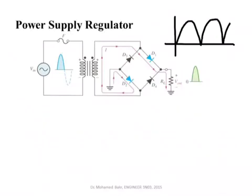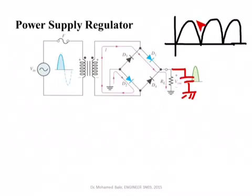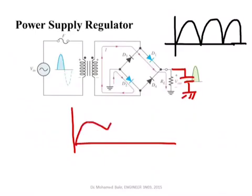If I want to supply this rectified voltage to a machine or tablet, I need a DC voltage. The solution is to add a large capacitor in parallel with this voltage. As the voltage increases, the capacitor charges; when it reaches the peak, the capacitor starts to discharge, but because of its large value it discharges very slowly through the load resistor. The resulting output waveform starts with a charge, drops slightly, charges again, drops slightly, and so on — creating a nearly smooth DC-like voltage.